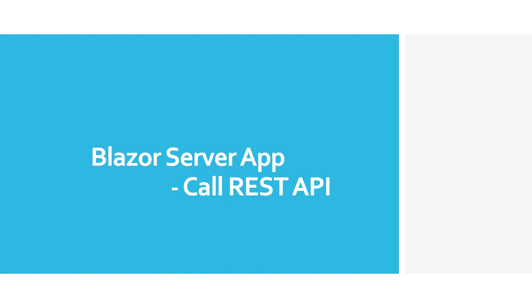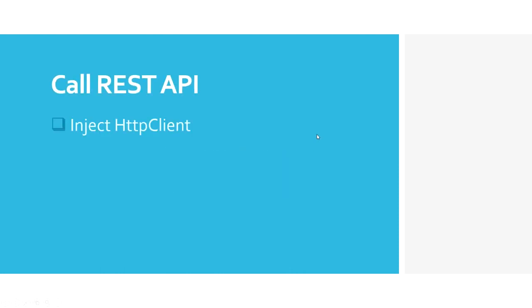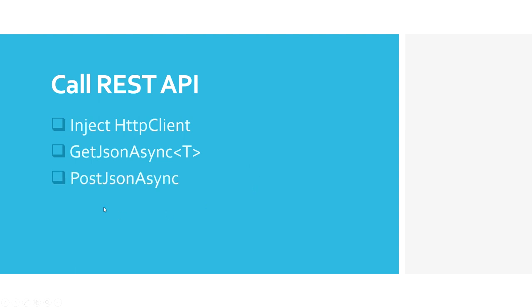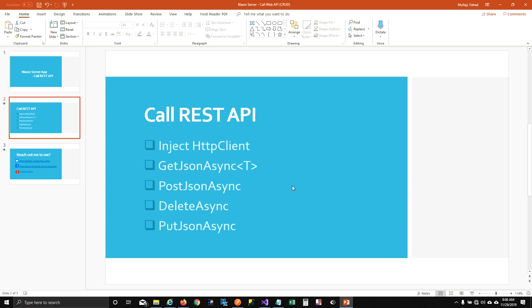In this episode I'm going to call a REST API from a Blazor server app. The first thing you have to do is inject an HTTP client into your Blazor component. Then I'll call GetJsonAsync to get values from the API and store them in my model. To create a new record you call PostJsonAsync, DeleteAsync is used for deleting, and PutJsonAsync is used for updating records.